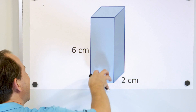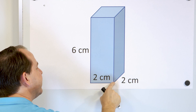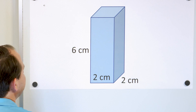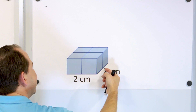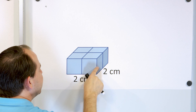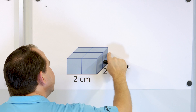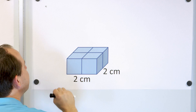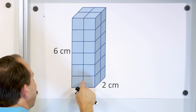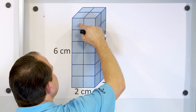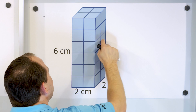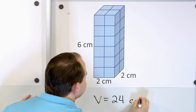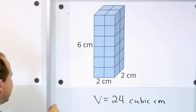Now here's our last problem. We have a little skyscraper here — two centimeters wide, six centimeters tall, and two centimeters deep into the board. Let's take a look at only the first layer at the bottom. It's two centimeters wide and two centimeters deep, so there are two cubes this way and two cubes this way — one, two, three, four cubes altogether in the bottom layer. How many layers do I have? I have four cubes here, and then four, and then four, and then four, and then four, and then four — four times six is 24. So 24 cubic centimeters.